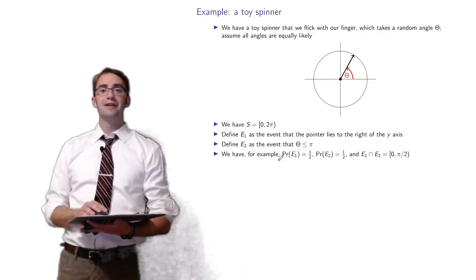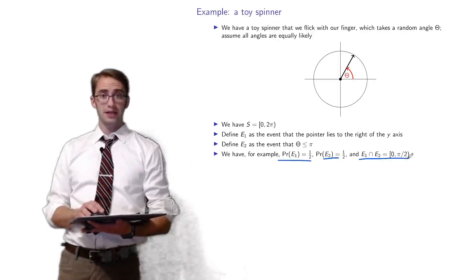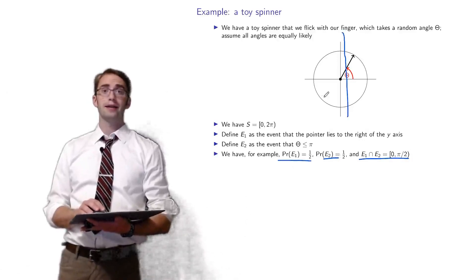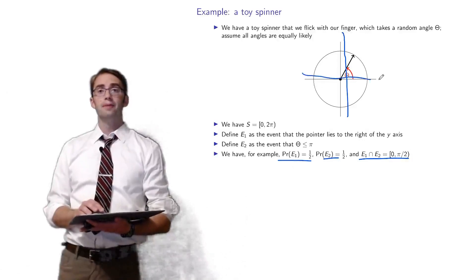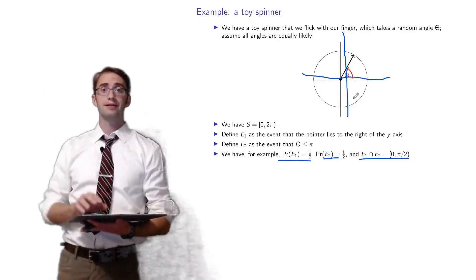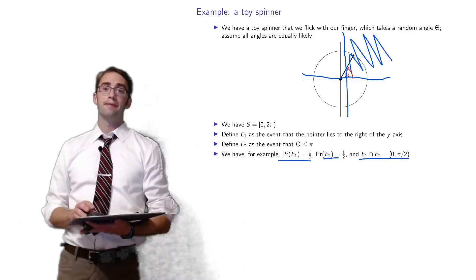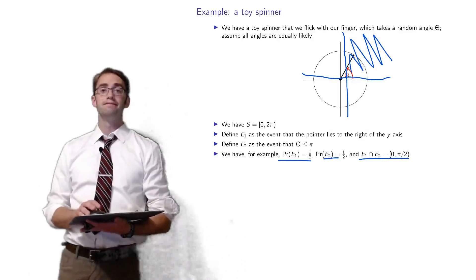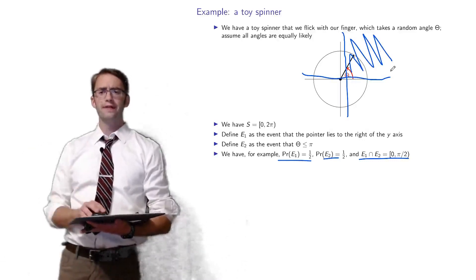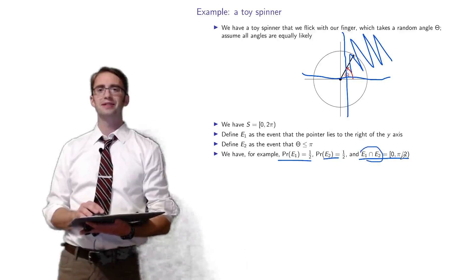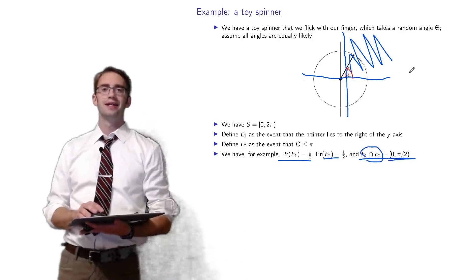E1 intersect E2 means you're to the right of the y-axis and your angle is less than pi — so you'd be in the first quadrant. The probability of that is one fourth, and the intersection is the interval from zero to pi over two. The half-open/half-closed interval distinction is a completely unnecessary formality — ignore it.